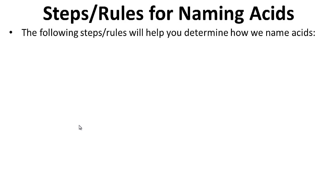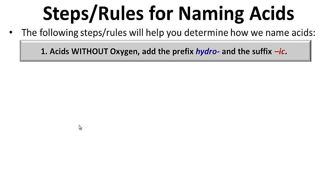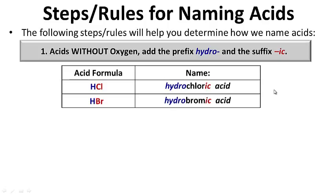The following steps or rules will help you determine how we name acids. Step one: for acids without oxygen, we add the prefix hydro and the suffix ic on the end. We begin the acid with hydro and it ends with ic. For example, HCl — notice there's no oxygen — so we put hydro in the front and ic on the end, giving us hydrochloric acid. HBr becomes hydrobromic acid. No oxygen: hydro in the front, ic on the end.